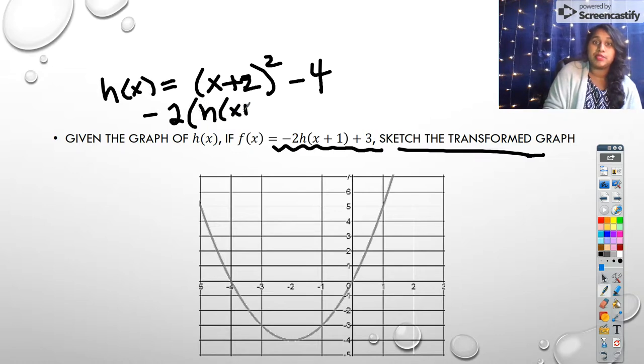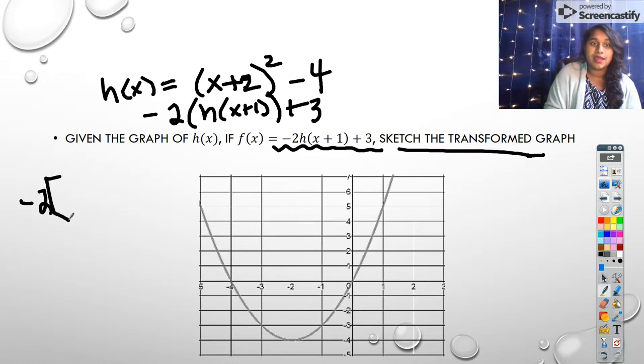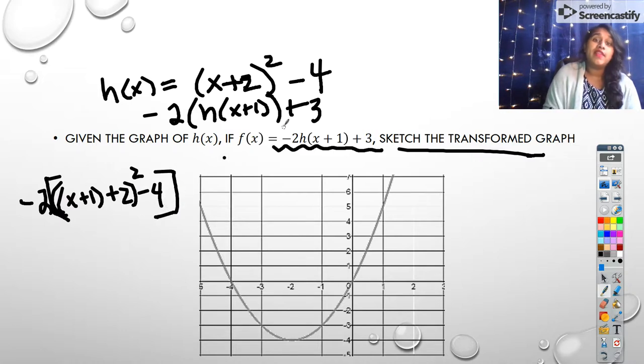right, plus 3. So I'm going to put in my h right there, except for my x, I'm going to do x plus 1. So that becomes negative 2 times my h, and instead of x, it's x plus 1. So this becomes x plus 1 plus 2 squared minus 4, and all of that is inside. Then the plus 3 gets tacked on, right? So if I keep on going,